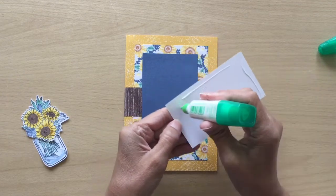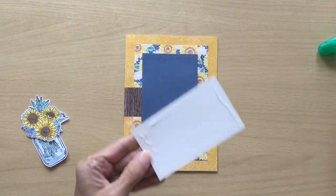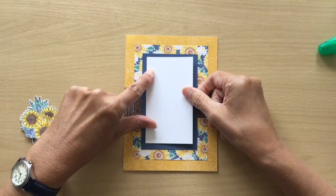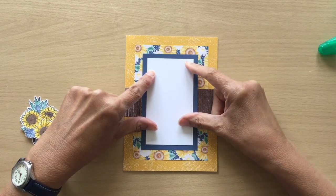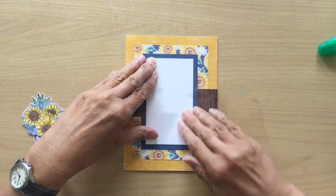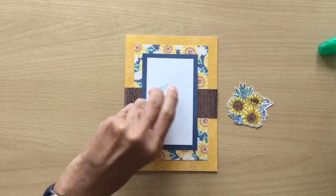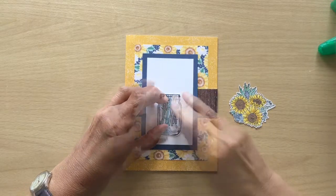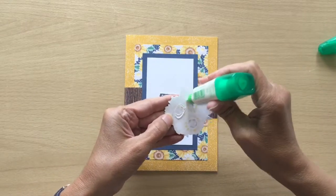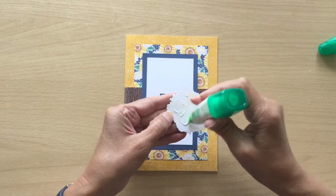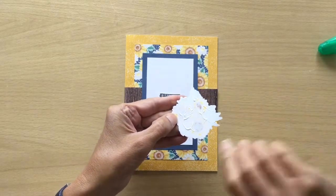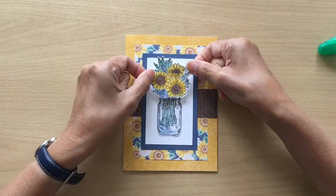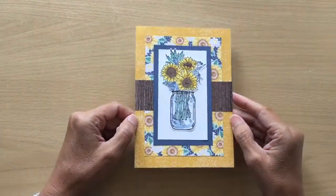We're going to stick our jar down, so if you wanted to put a sentiment on you can do that. So obviously the most time-consuming piece of this is going to be your coloring in and fussy cutting of your flowers and your jar. And there is card number one finished.